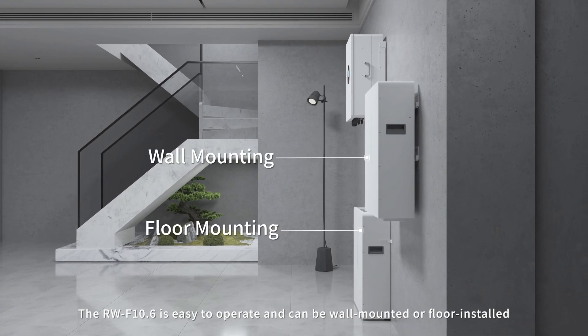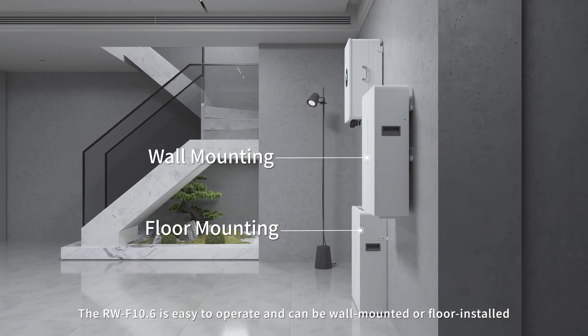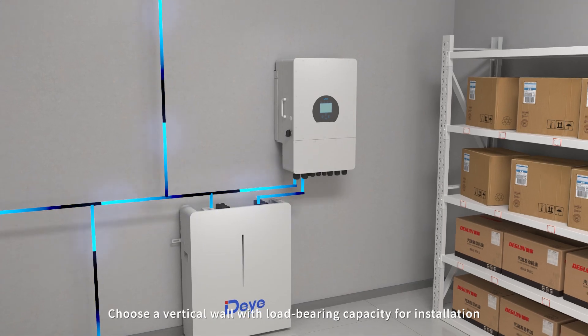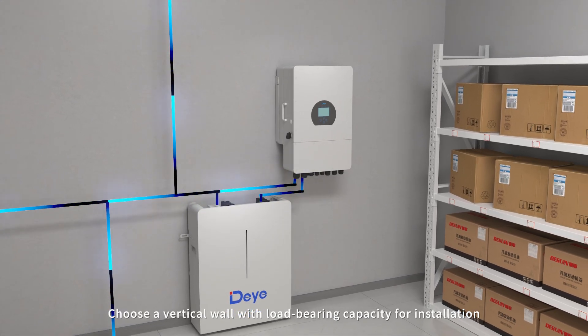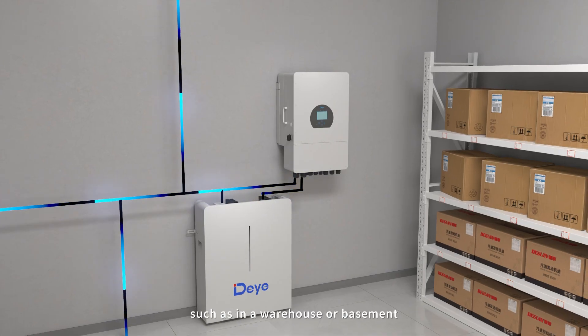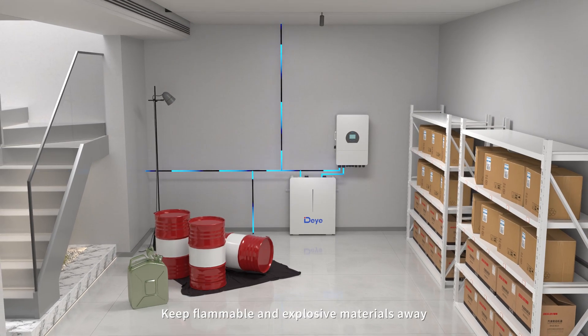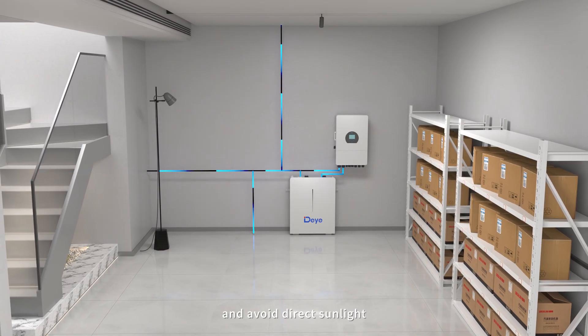The RW-F10.6 is easy to operate and can be wall mounted or floor installed, maximizing space efficiency. Choose a vertical wall with load bearing capacity for installation, such as in a warehouse or basement. Keep flammable and explosive materials away and avoid direct sunlight.